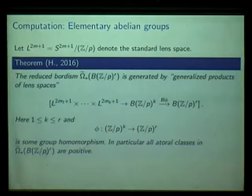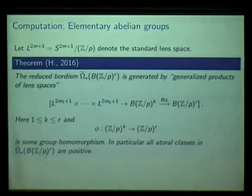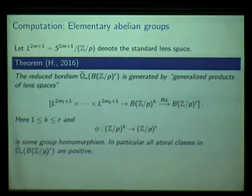We have canonical maps: take a product of lens spaces and map it to a product of classifying spaces of the group Z/p, using the canonical map from each lens space to BZ/p, and take the product of these maps. This alone is not enough to generate the bordism; by passing from the classifying space of Z/p^k to that of Z/p^r using group homomorphisms we get what I call generalized products of lens spaces. This statement also has non-trivial conclusions in the topology of group actions, going back to the classical work of Conner and Floyd in the 1960s.